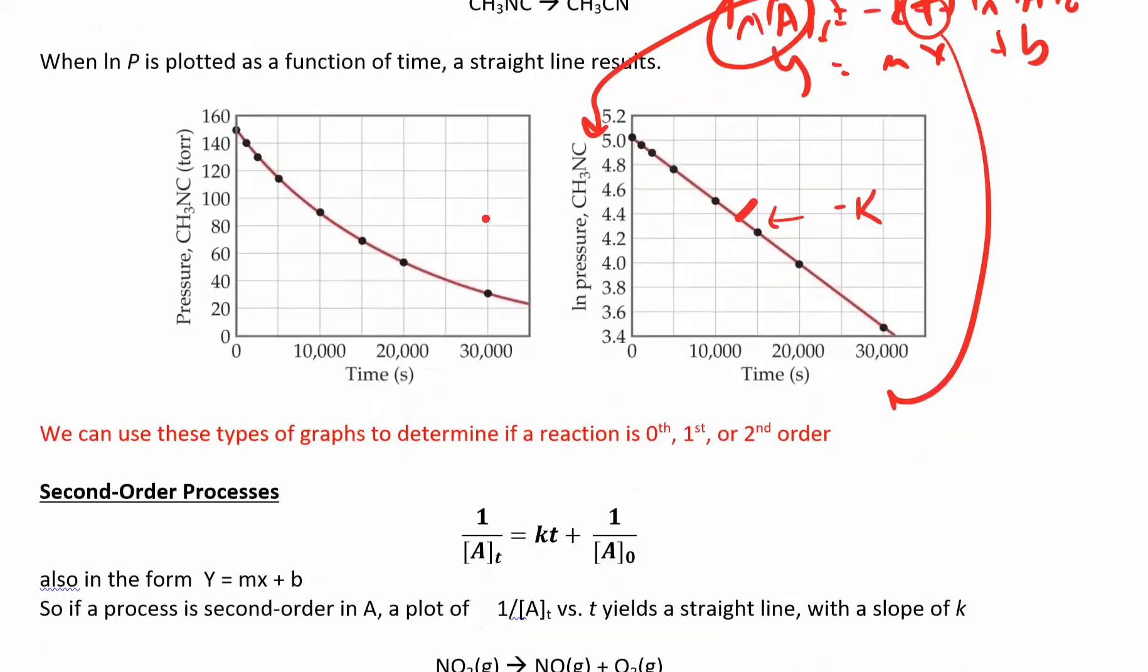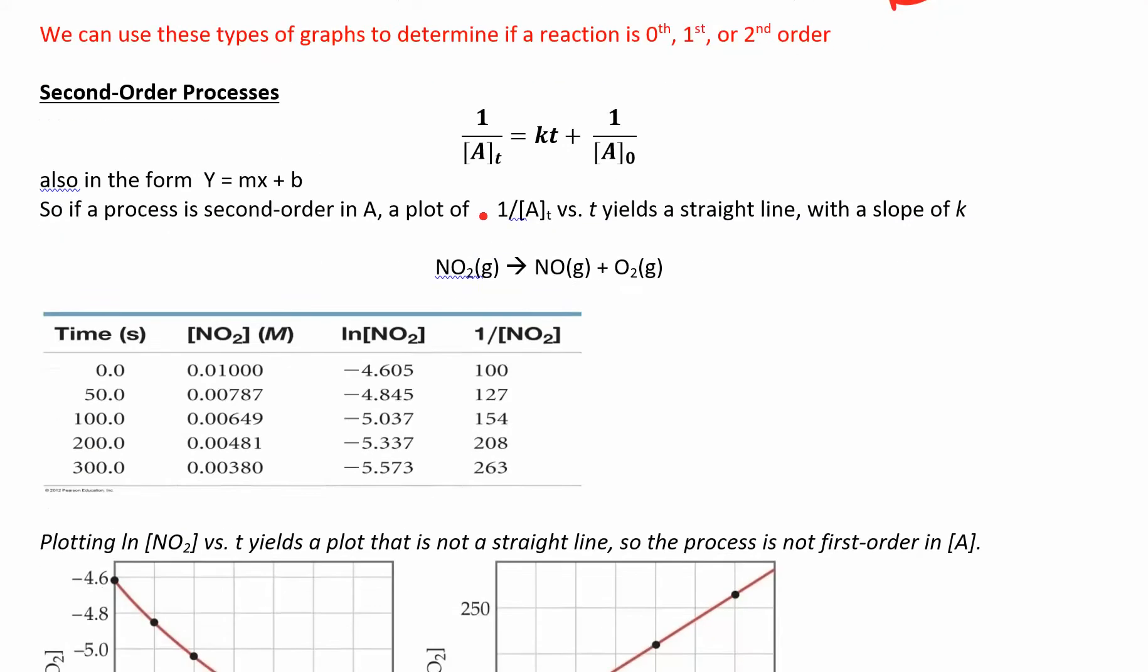So to get the second order linear equation, the integrated rate law, did the same thing that we did before. You have your change in concentration over the change in time is equal to K times A squared. But now this time when you integrate these, you get this equation. After you evaluate it from zero to T, which is also in the form of Y equals MX plus B.